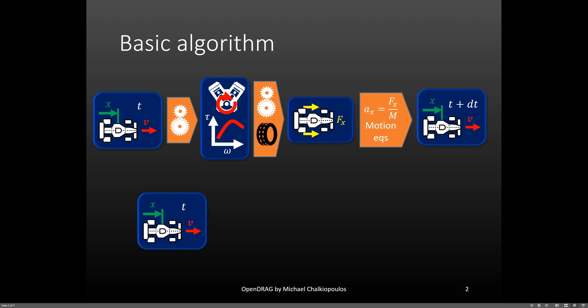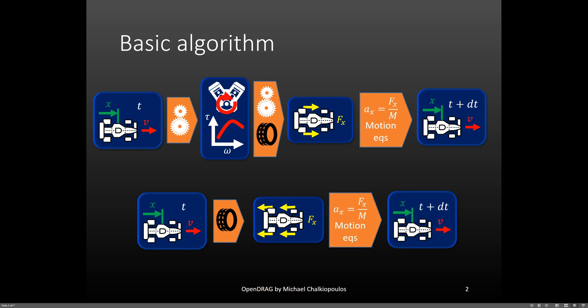Let's think about braking now. Again, the state of the vehicle is known. Using the tire model, we get the maximum braking forces. Then, using the equations of motion again, we can calculate the next state. This process goes on from maximum speed to zero.